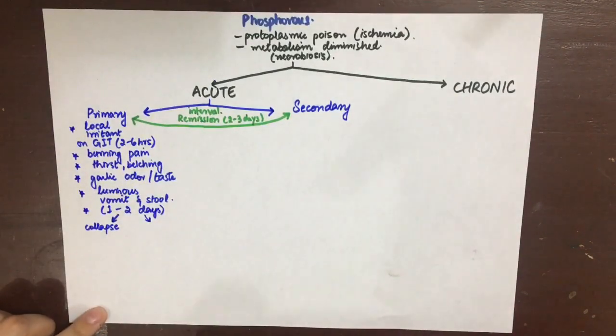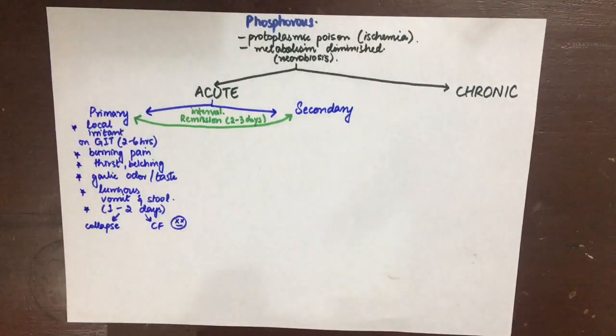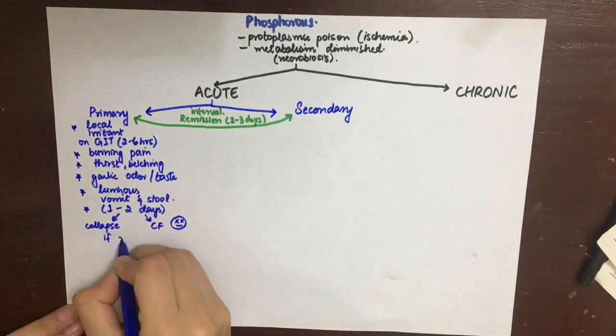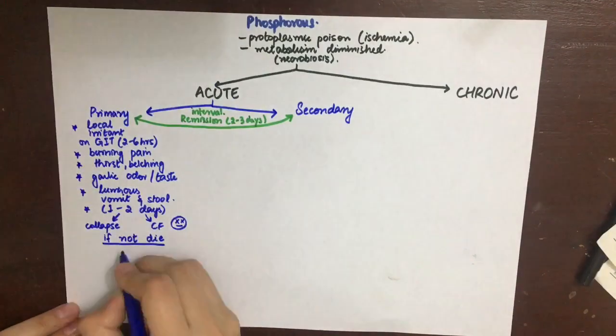All of these symptoms last for one to two days. Either the patient collapses or has cardiac failure. If that is not the case, then remissions are common after the bouts of vomiting and diarrhea.